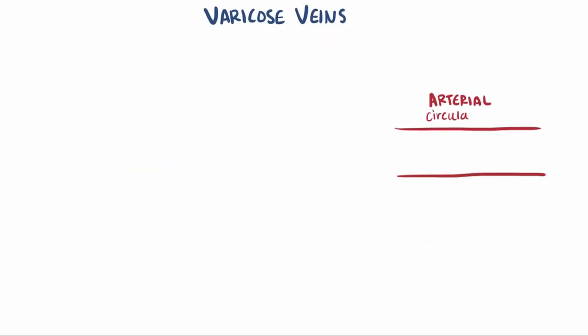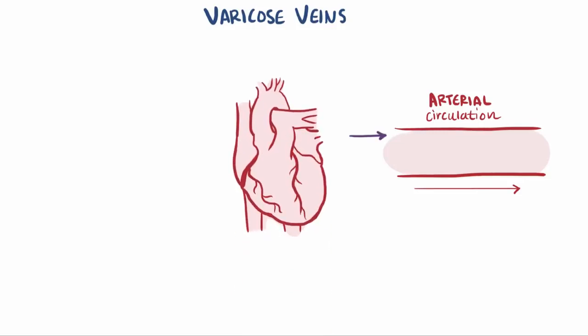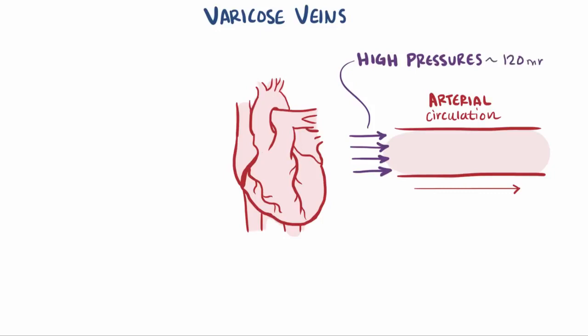The arterial circulation, going away from the heart, is a high pressure system, meaning the movement of blood is dependent on high pressures that essentially push it through the arteries, on the order of 120 mmHg.